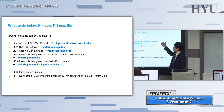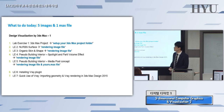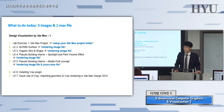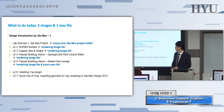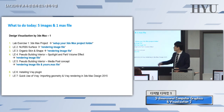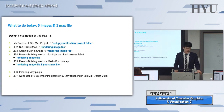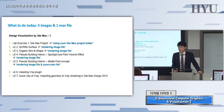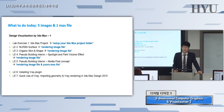Lab exercise number one is just the environmental setup. Two and three are types of geometric modeling issues. Four and five are modeling and rendering — I name it pseudo-building interior, which means just the surface-based building modeling, interior of the building.